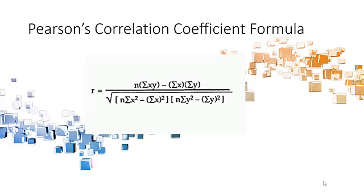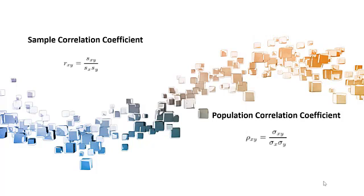You may come across two other formulas in elementary statistics. This is the sample correlation coefficient, and this is the population correlation coefficient.